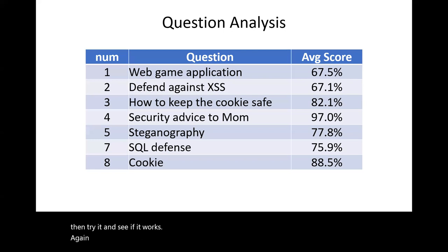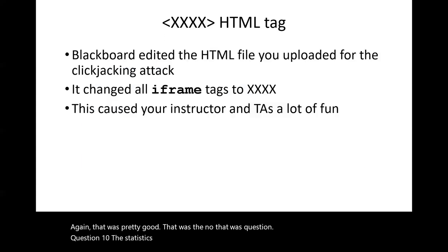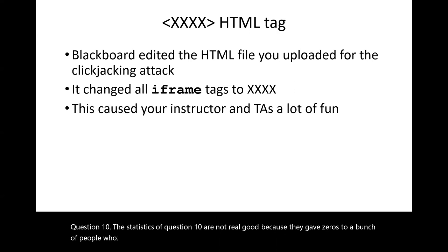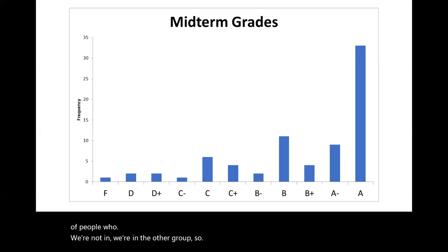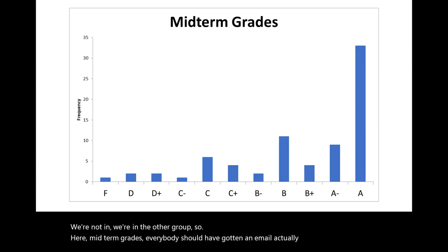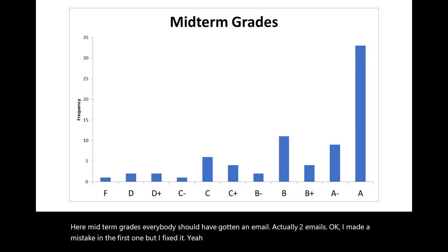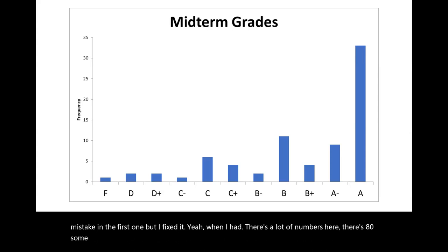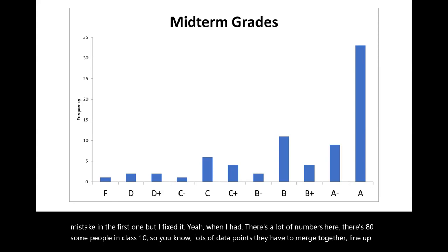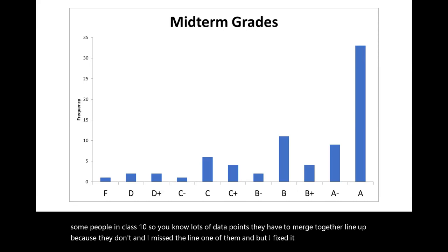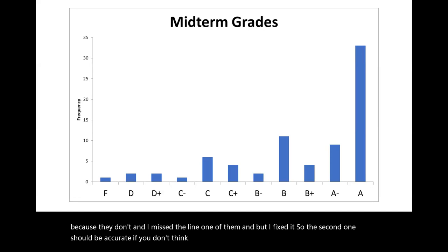Midterm grades — everybody should have gotten two emails. I made a mistake on the first one but fixed it. With 80-some people in class and lots of data points to merge, I missed one line, but the second email should be accurate. If you don't think it's accurate, let me know. If you are down in the lower score area, note that today is the last day to drop — 5:05 PM — the registrar's office is likely closed, though you might be able to do a web drop.